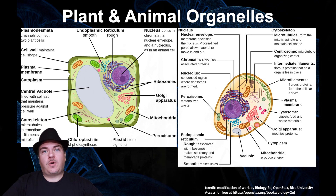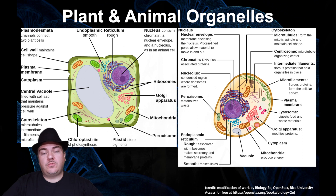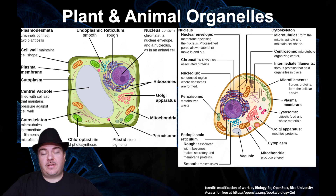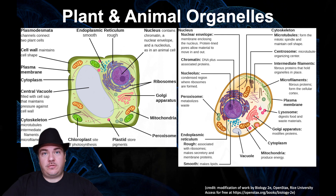For some reason, a lot of people think that plants are not eukaryotic cells, which is incorrect. Plants are eukaryotic cells. An example of a prokaryotic cell is not a plant — it would be like a bacteria. That's an example of a prokaryote. So animals and plants are both eukaryotes.